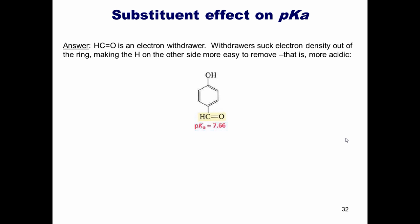Let's first take a look at the compound on the left. As you'll note from our earlier discussion, the aldehyde group shown here is an electron withdrawer. You should remember that electron withdrawers suck electron density out of the ring. I can illustrate this by using the resonance structure shown here.